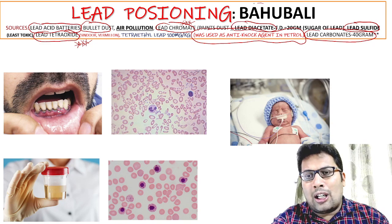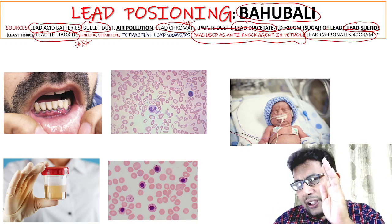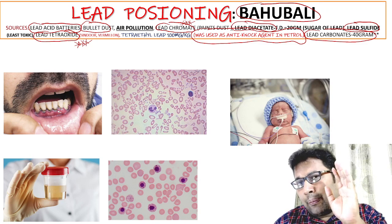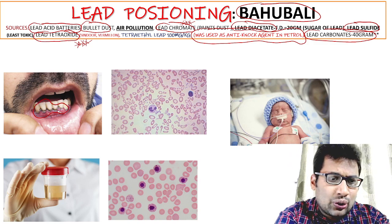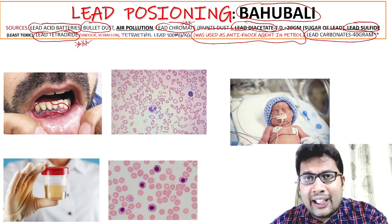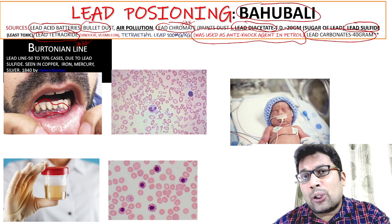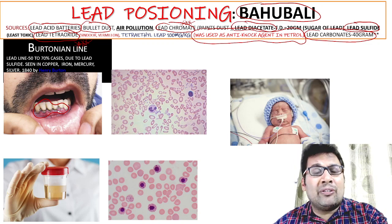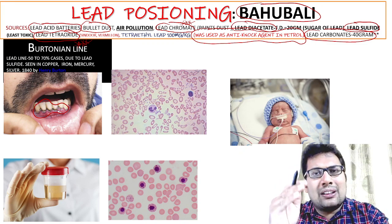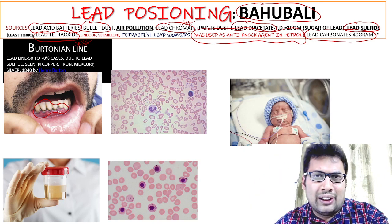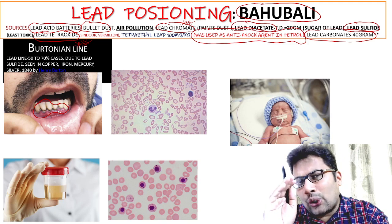Remember the mnemonic BAHU BALI. B stands for Burtonian line — also known as Burton's line — which is a clearly visible blue-black line seen in 50 to 70% of cases. However, it is not specific; it can also be seen in copper, iron, mercury, and silver poisoning. It was first described by Henry Burton in 1840.